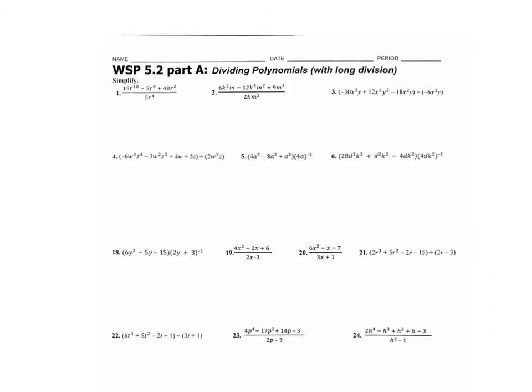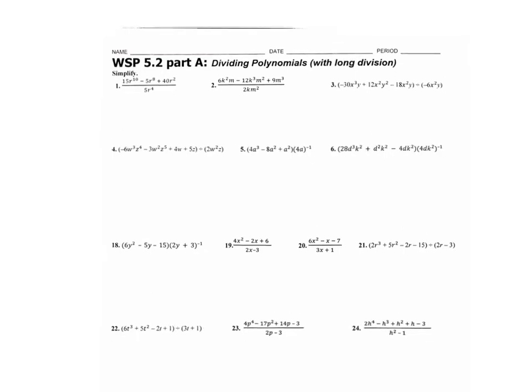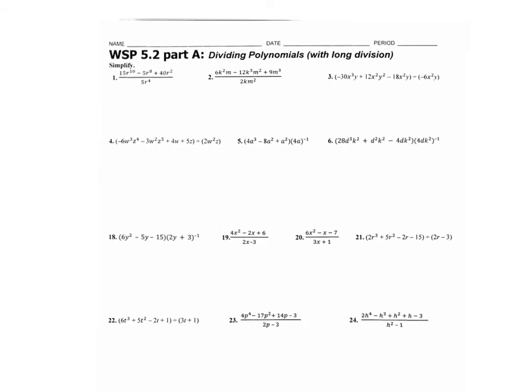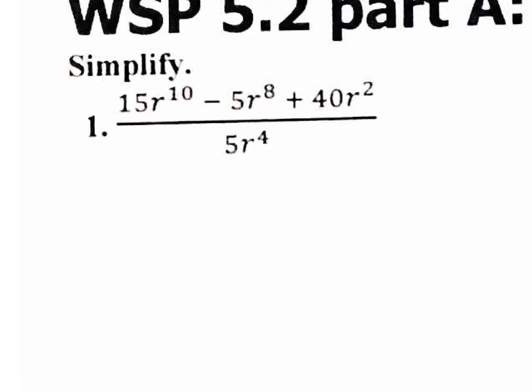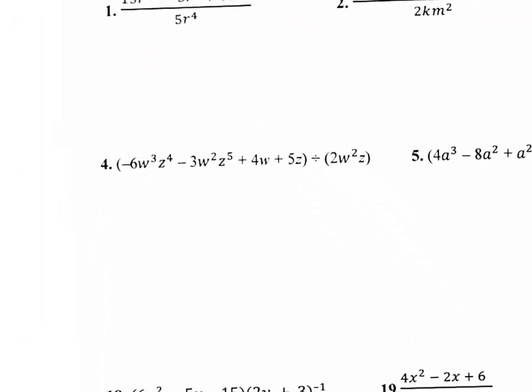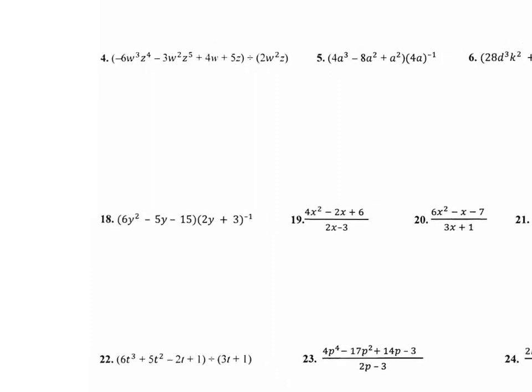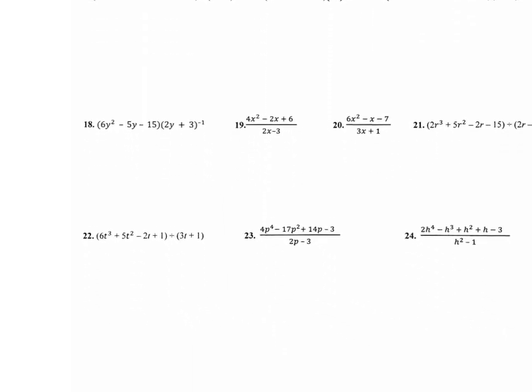So here's the worksheet that you guys are going to be working on right now. Before we end this video, let's do a couple of these — specifically the second half of this worksheet, which are the questions being divided by a binomial. We'll skip the ones where you're dividing by a monomial and just do the ones divided by a binomial, which would be numbers 18 through 24.